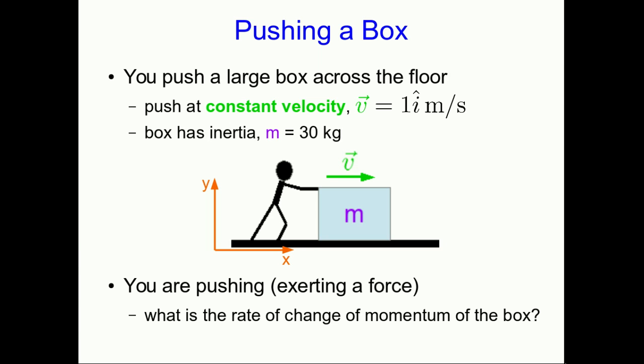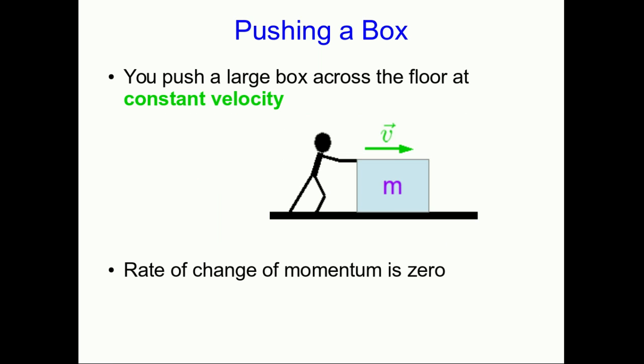At the end of the first half of this video lecture, I posed this question: you were pushing a box at a constant velocity across a floor, and I asked what the rate of change of momentum of the box is. I tried to fool you by pointing out that you are pushing. The answer is that the rate of change of momentum is zero. The box is moving with constant velocity and its inertia isn't changing, so its momentum isn't changing.